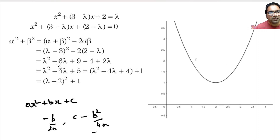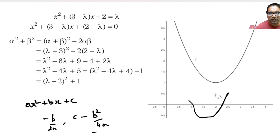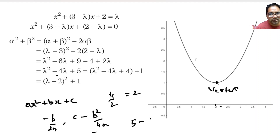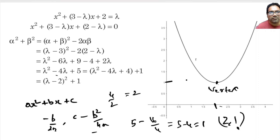For this equation, we are looking for the minimum value, which is the y-coordinate of the vertex. The minimum value of a graph facing upwards is always at its vertex. The x-coordinate of the vertex is minus b by 2a: that is minus of minus 4, which is plus 4, divided by 2, equal to 2. The y-coordinate is c minus b squared by 4a: that is 5 minus 16 divided by 4, which is 5 minus 4, equal to 1. So the lowest point is at (2, 1) and the minimum value of this function is 1.